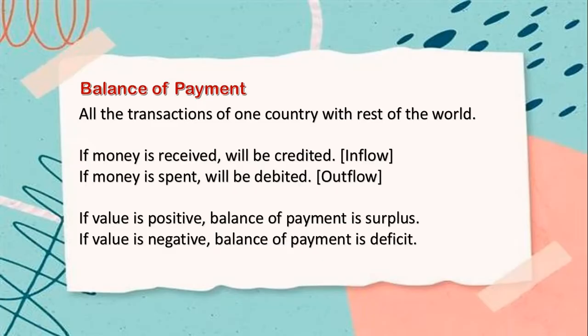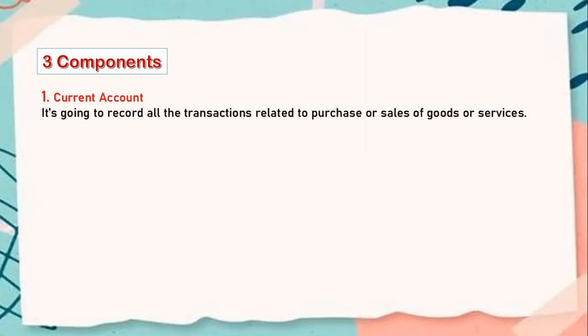Balance of payment has three components. The first one is the current account. The current account records all transactions related to the purchase or sales of goods or services — for example, imports and exports. All these transactions where you're selling or buying something internationally will be recorded in the current account.